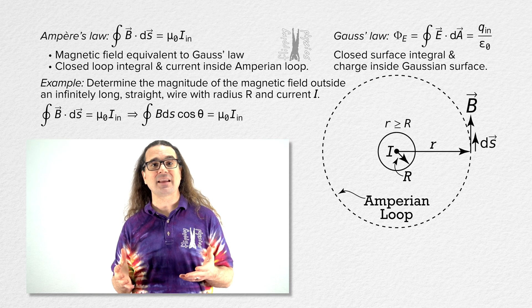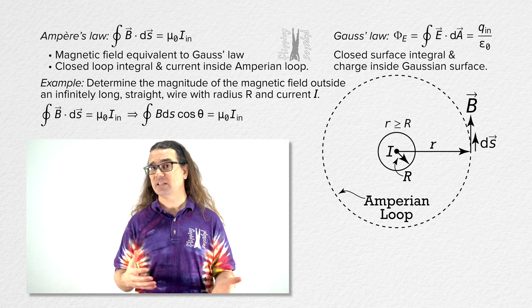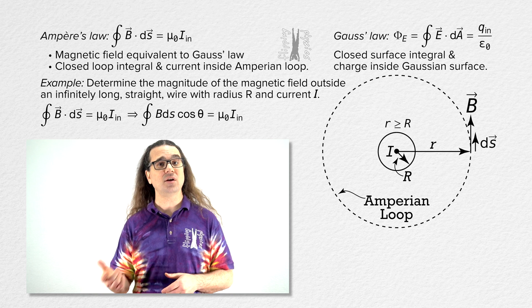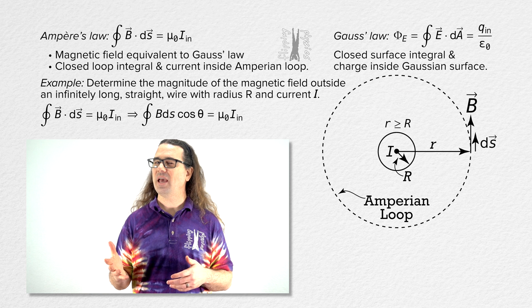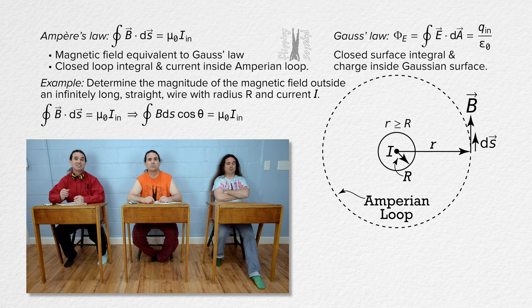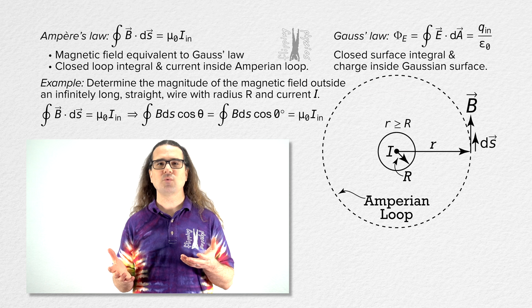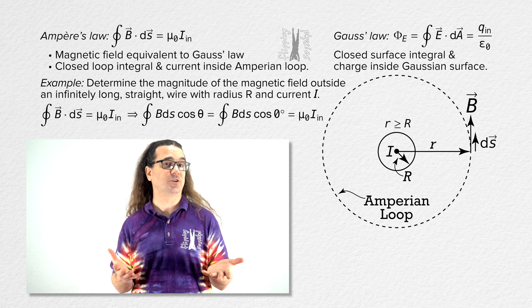So at this location, the magnetic field is up and the infinitesimally small displacement ds is also up. Class, what is the angle between up and up? Zero degrees. And class, what is the cosine of zero degrees? One.